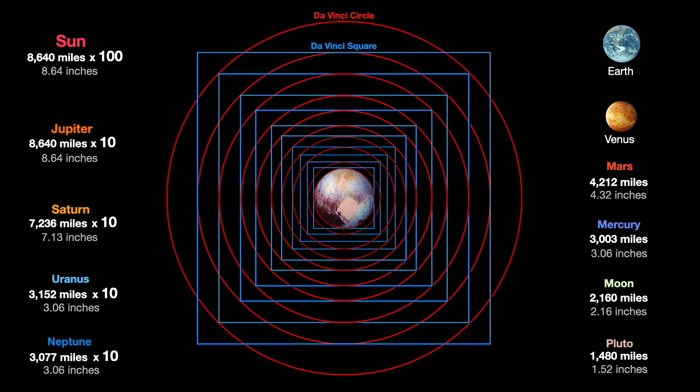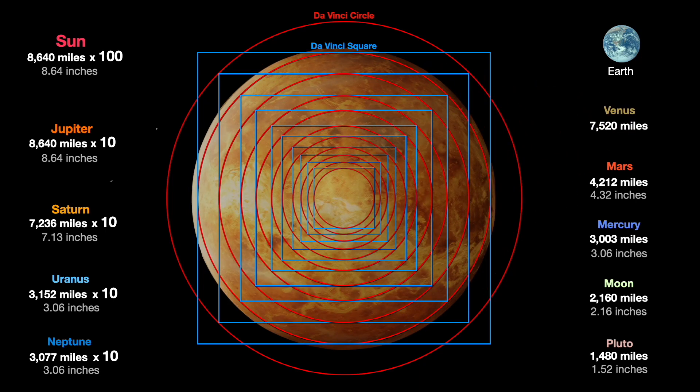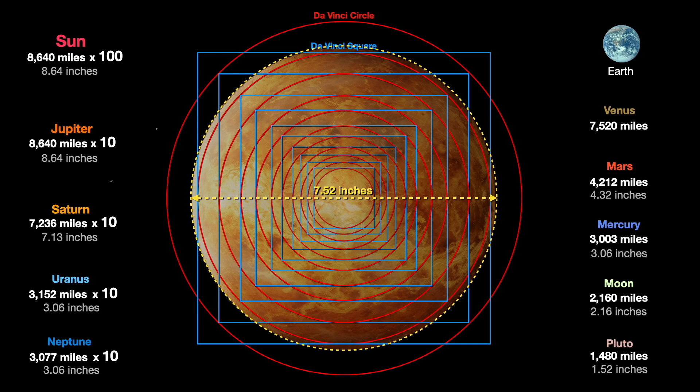But at this point, something strange happens. Venus, goddess of love, is unpredictable. She does not match any of the circles or squares. She comes in at 7.52 inches diameter.